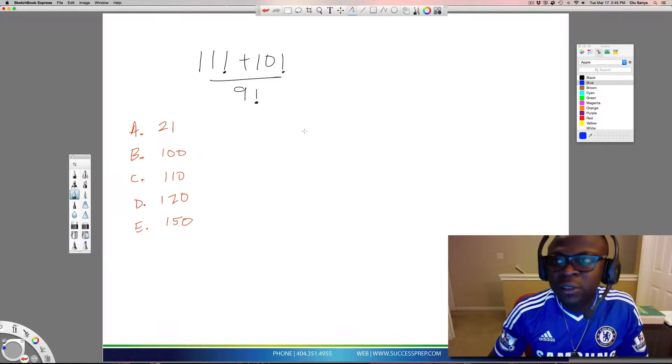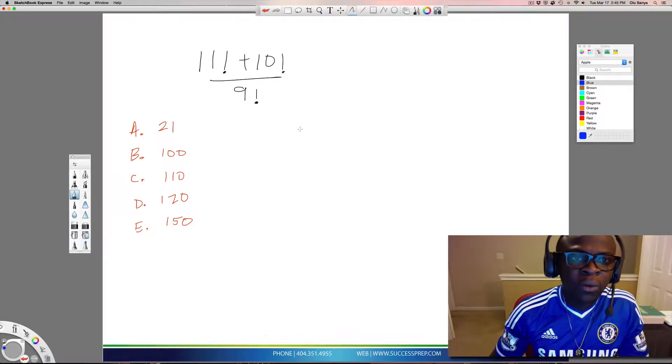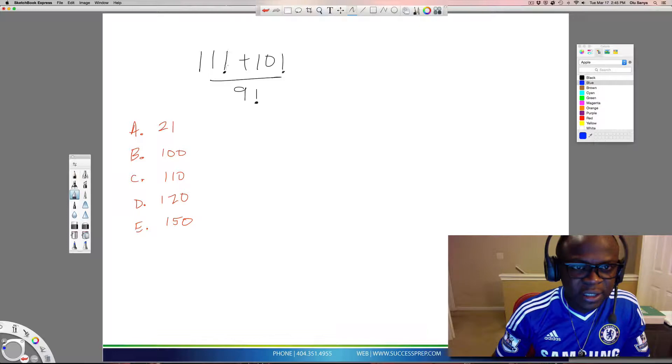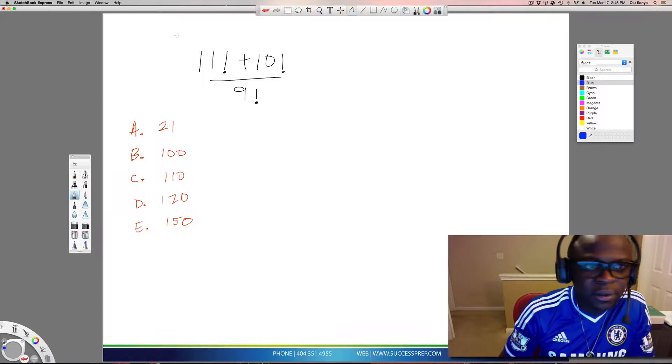For a question like this on the GMAT or GRE, what they're looking for is your understanding of the math idea called factorial, which is this exclamation mark looking thing. I'm just going to spell that out: factorial.